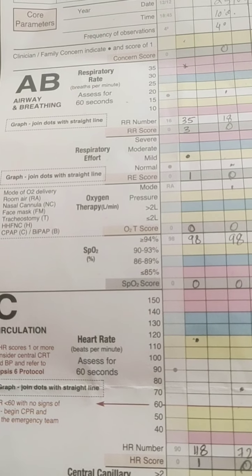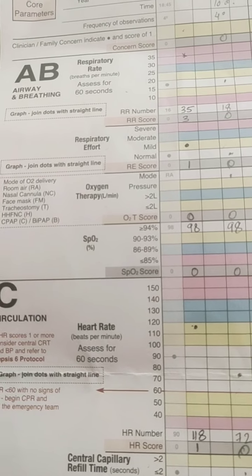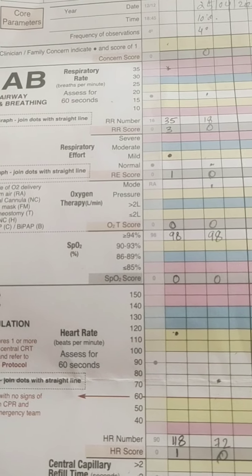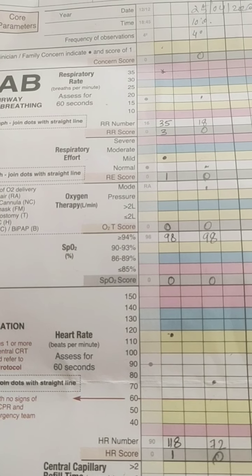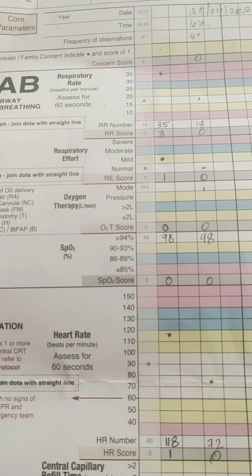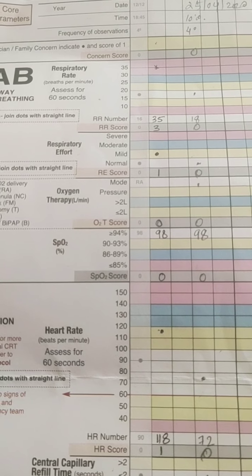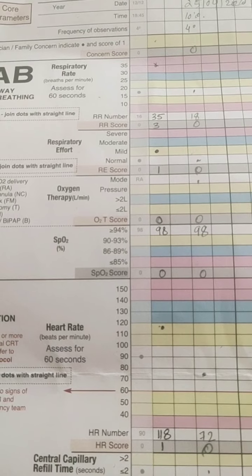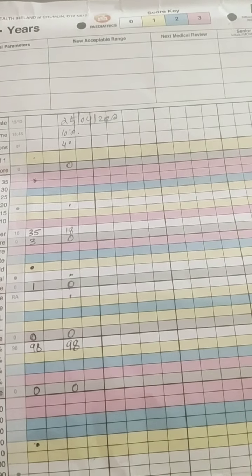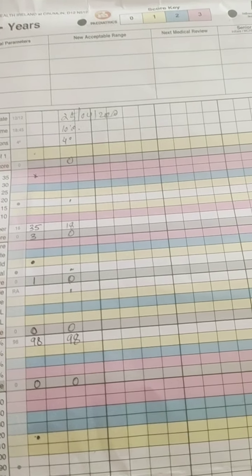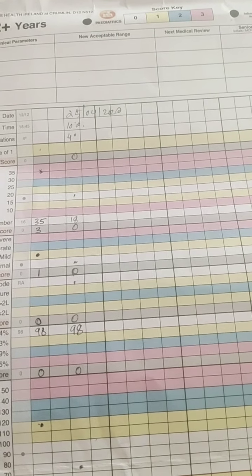We start with the parameters. The first is Airway and Breathing, where we monitor the respiratory rate, respiratory effort, oxygen therapy, and oxygen saturation. This PEWS chart is mainly used for children above 12 years. The normal respiratory rate range is 15 to 20. If the respiratory rate is, for example, 18, we put a dot and write 18 — the score will be zero, indicated by white. White is zero, yellow is score one, blue is score two, and pink is score three.